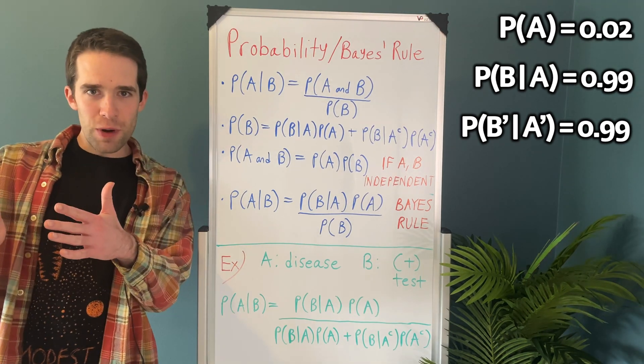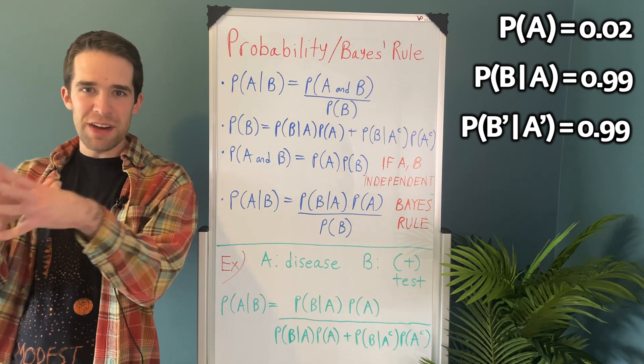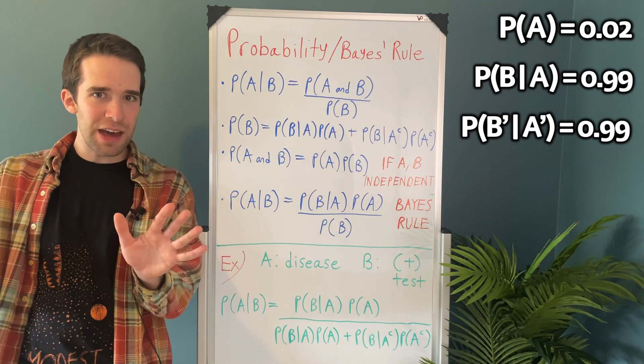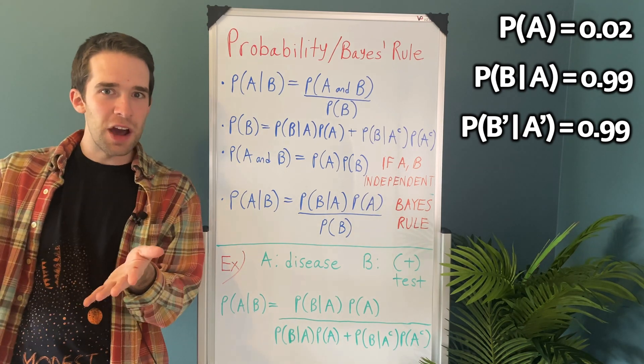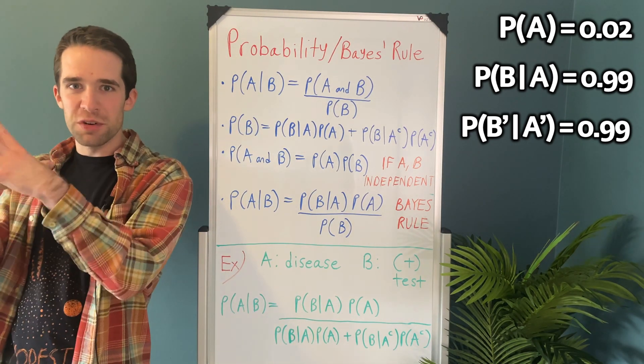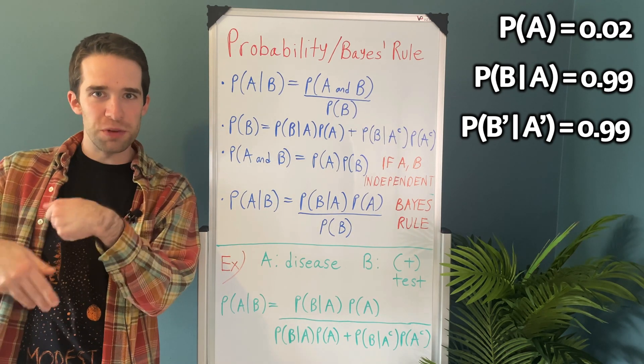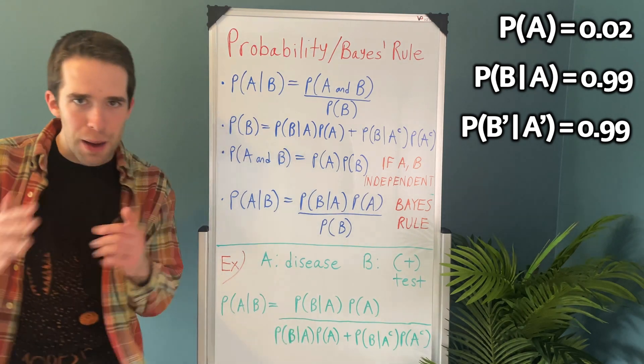Let's start with the numerator. The probability of B given A, that is the probability of having a positive test given you have the disease, we already have that. That's the sensitivity. That's 0.99 or 99%. We have the probability of A because we know that 2% of the country has the disease. So that's 0.02 or 2%.